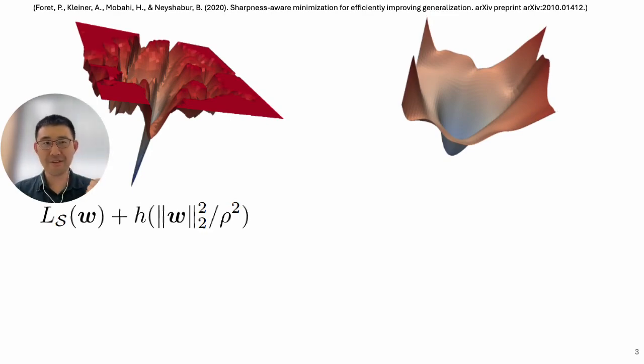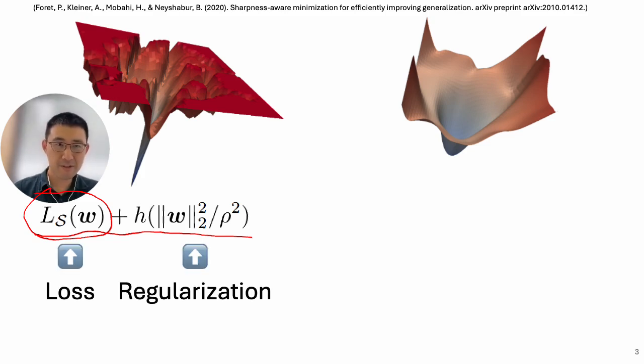So how did they do that? Actually, the authors did a trick that's very simple. So this is, let's say, usually the loss function we're optimizing. This is just the loss itself, usually comparing the predicted value with the labels we have from the data,